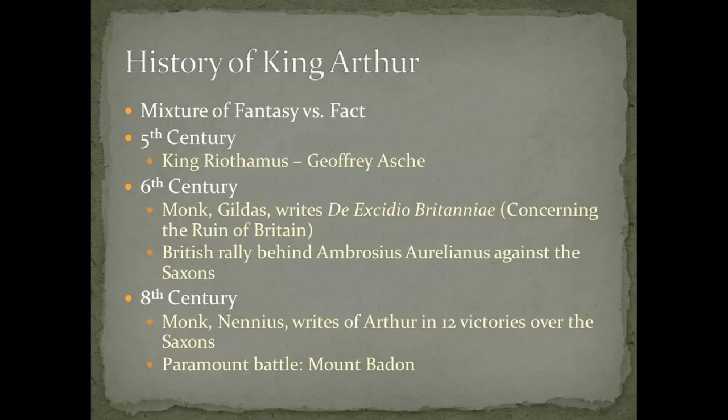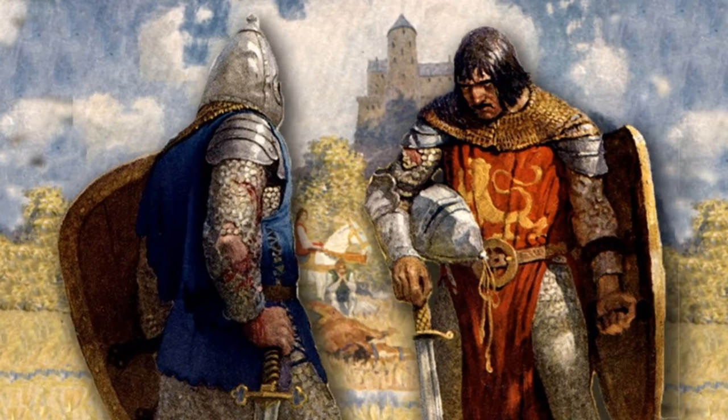Geoffrey also frequently refers to Gildas and Bede — historians who covered similar periods — while making sure to mention that he is the first to focus on the ancient British kings, establishing himself as the gatekeeper of their specific history. At the end of the Historia, he cements his status as their sole historian by asking that all be silent regarding the kings of the Britons, since they do not have the book in the British tongue which Walter the Archdeacon of Oxford obtained from Wales.